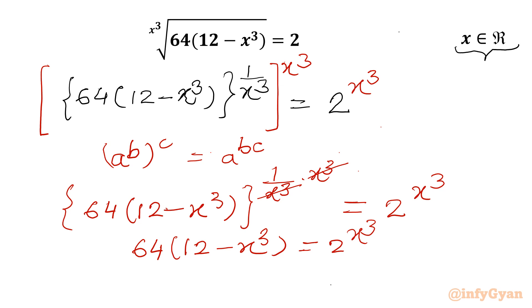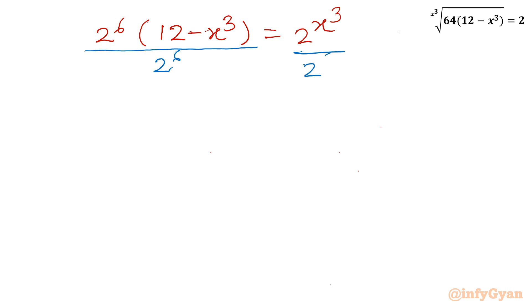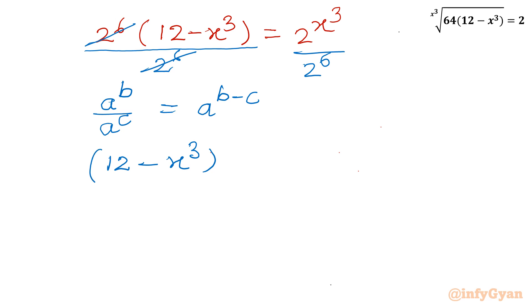The equation becomes 64 times (12 minus x³) equal to 2 to the power x³. Now I can write 64 as 2 to the power 6. So we have 2⁶ times (12 minus x³) equal to 2 to the power x³. I will divide both sides by 2⁶. Using the property a^b over a^c equals a^(b−c), the equation becomes: 12 minus x³ equal to 2 to the power (x³ minus 6).